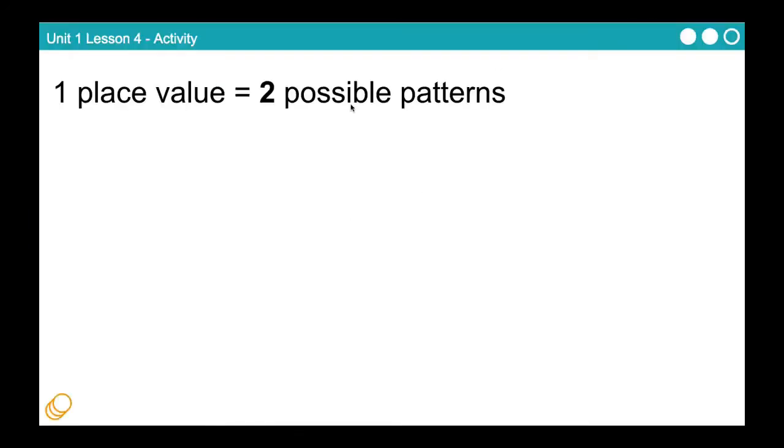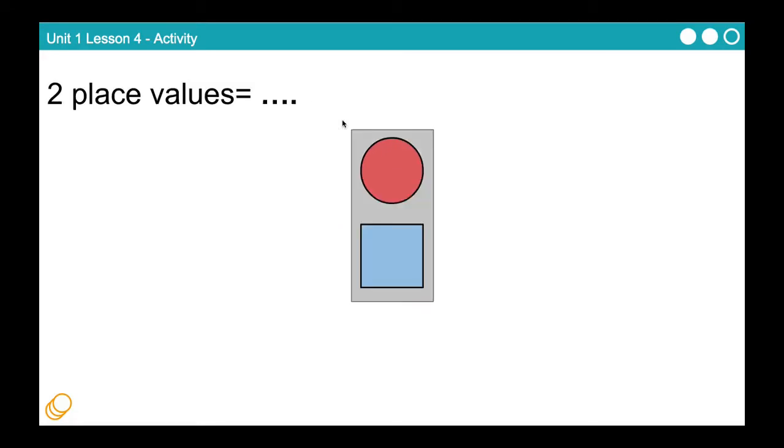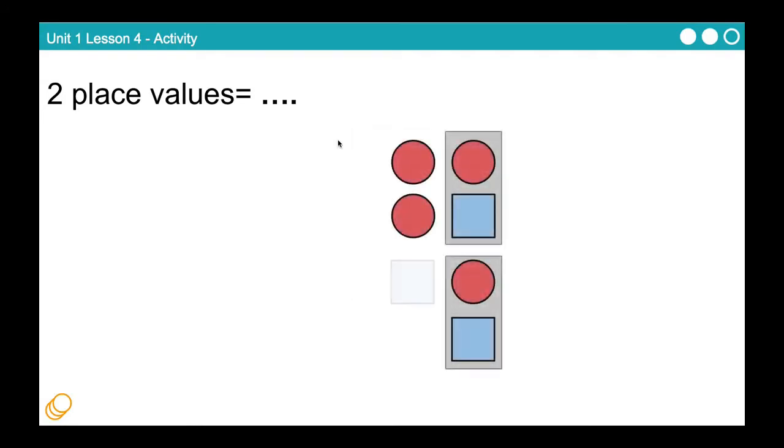Okay, so kind of getting into the nitty-gritty here. With only one place value, if we only have one slot, there are only two possible things we can communicate. There's circle and square. Now, if you add an additional place value, that number, what do you think it goes up to? There are now four possible patterns.